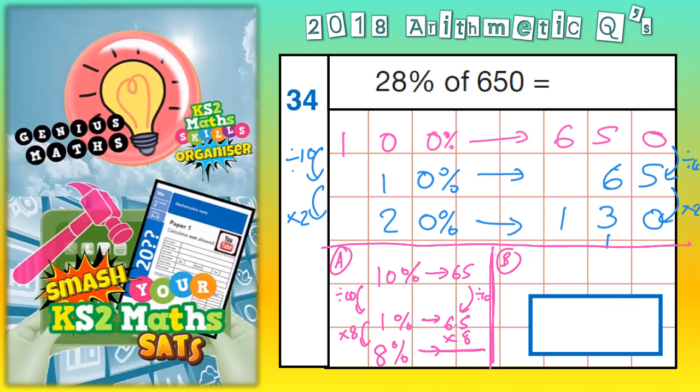So, you'd have to do times the 6.5 by 8. 6.5 times 8. 8 5s are 40, so you put the 0 in, carry the 4. 8 6s are 48, plus the 4 is 52. Put the decimal point in, so it's 52.0.